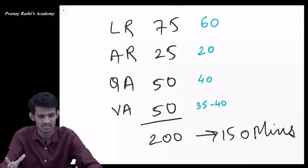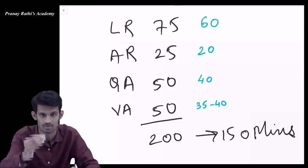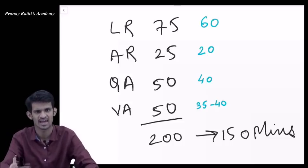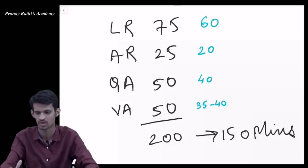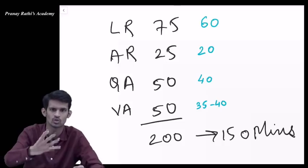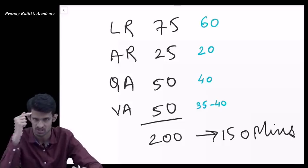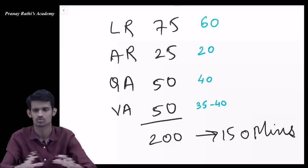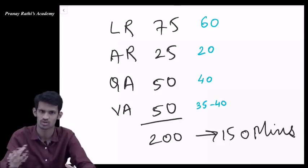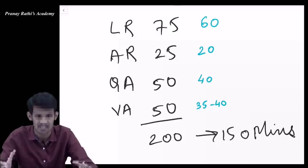Last year we had students who took 99 percentile in the exam without solving verbal ability. They did not attempt verbal ability at all. On the whole basis of LR, AR, and quants being so strong, they crossed 99 percentile. But for 99.4 or higher percentile, you need a little bit of mastery, not a big mastery, in at least three sections, and one section at moderate level. Because there is no sectional cutoff, this is also something you can afford.